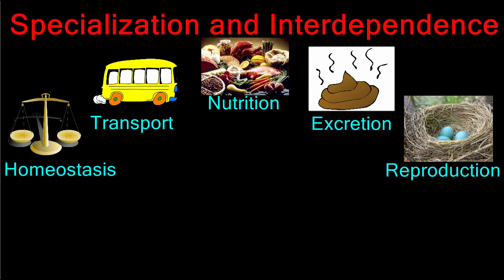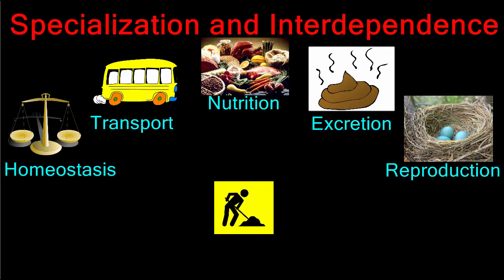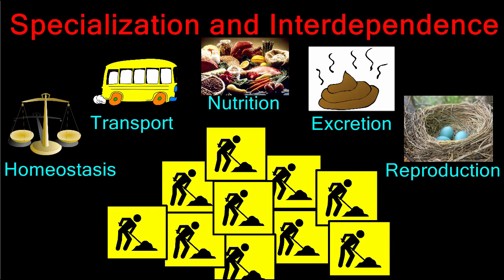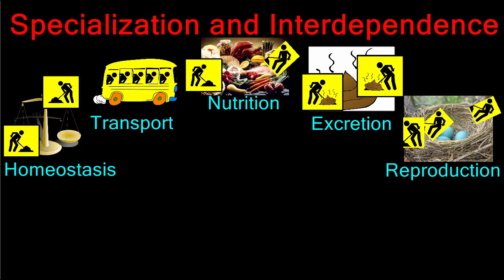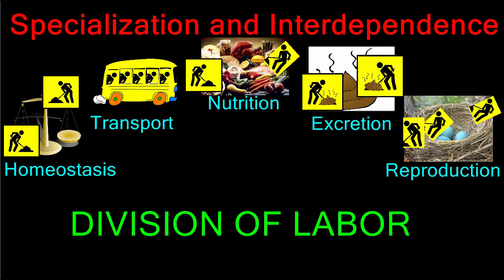A unicellular organism must accomplish all of these tasks with only one cell, while multicellular organisms have many cells to do the work. Since multicellular organisms have many cells available to complete these activities for survival, they are able to divide up the tasks and assign different jobs to different groups of cells. This is called division of labor.